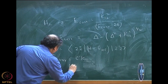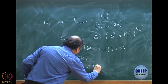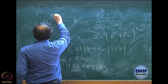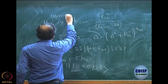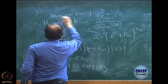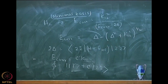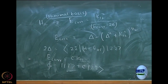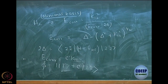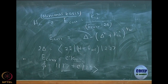So our wave function was |11 bar> plus C|22 bar>. Note again, what we are discussing is the hydrogen molecule in minimal basis. Minimal basis means there are only 2 orbitals, sigma g and sigma u. When you do MO theory, you have 1sA and 1sB, two atomic orbitals, LCAO gives you sigma g and sigma u.